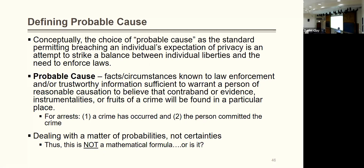Even if it's just the cash — say you robbed a liquor store and we have sufficient evidence to believe you have a bottle of gin from that store in your apartment — we can violate that expectation of privacy. For arrests, probable cause has two prongs: one, a crime has occurred, and two, the person we're arresting committed the crime. We need sufficient reason to believe both.